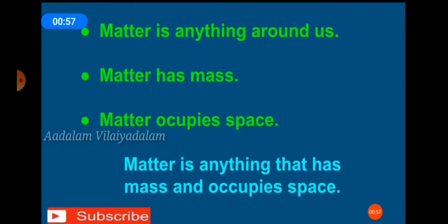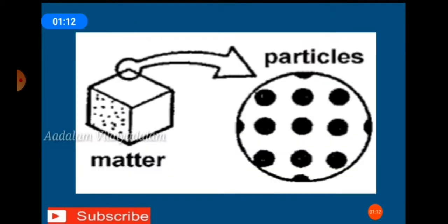So, matter is everything around us. Matter has mass and matter occupies space. Thus, we say that matter is anything that has mass and occupies space. Do you know what matter is composed of? As we have already learned, matter is made up of tiny particles called atoms.